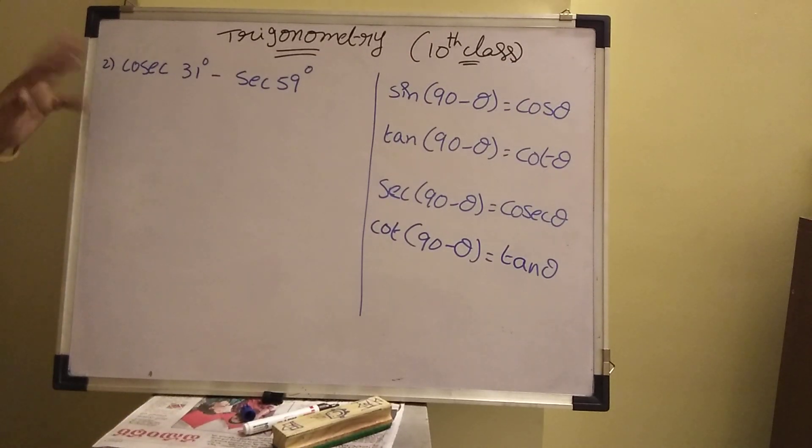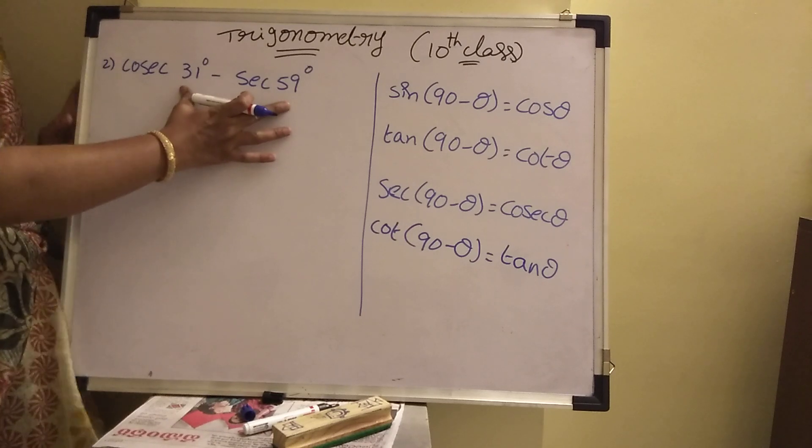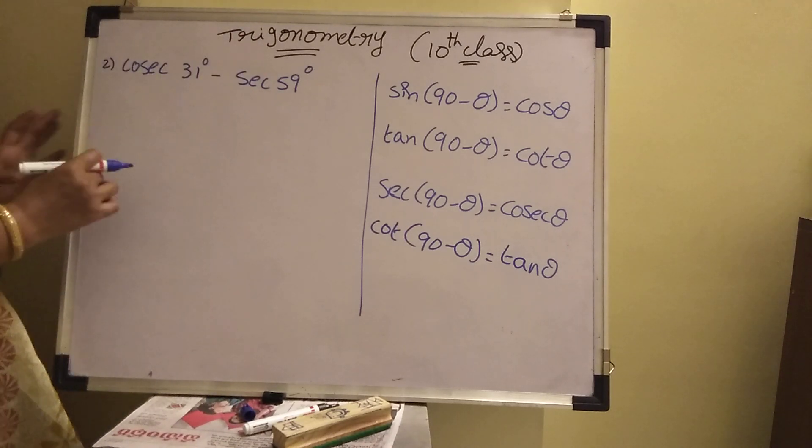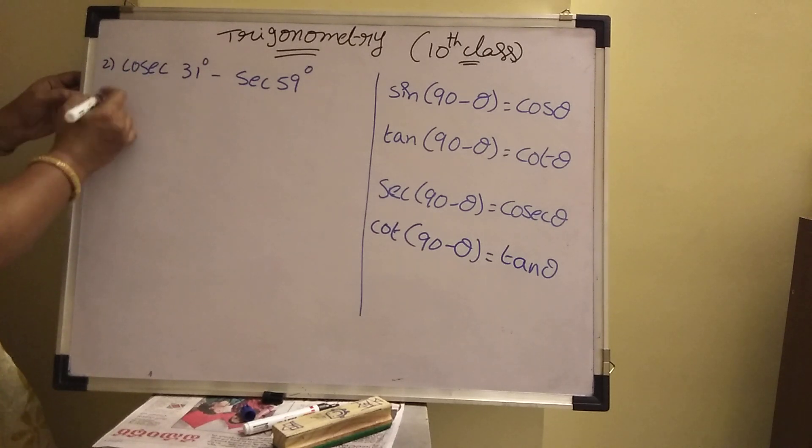See, one more sum is given here. Cosecant 31 degrees minus secant 59 degrees. What is the value of this? Here both angles add them. You will get 90. Then any one function, you change.